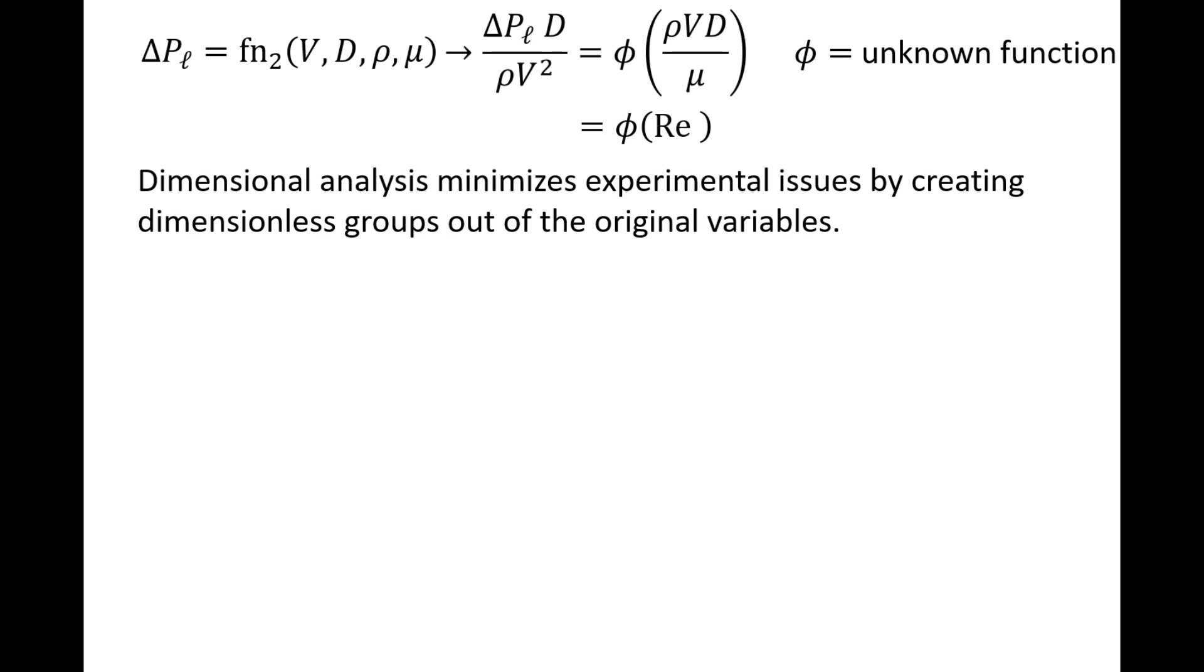By writing the relationship between all the variables in this manner, we have created a much simpler situation for ourselves to study the system experimentally. Now we can simply vary the Reynolds number and observe how the first dimensionless group changes. Varying the Reynolds number can be done very easily by adjusting the flow speed V of a common fluid such as water through a pipe with a fixed diameter.